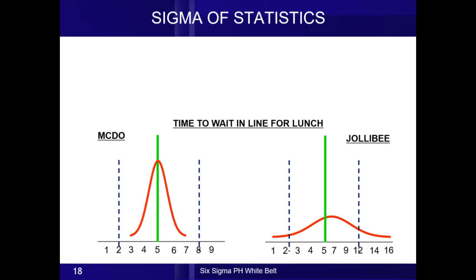If you factor in standard deviation to this scenario and ask the McDonald's manager how long it will take, the McDonald's manager will tell you: on the average you'll wait five minutes, but it will be somewhere between three to seven minutes. For Jollibee, it will tell you: on the average you'll wait five minutes, but it's somewhere between one to 16 minutes.